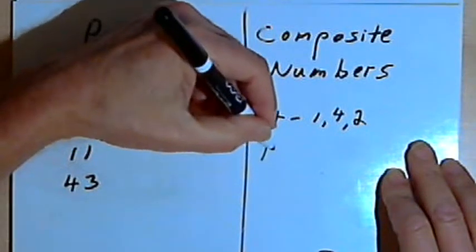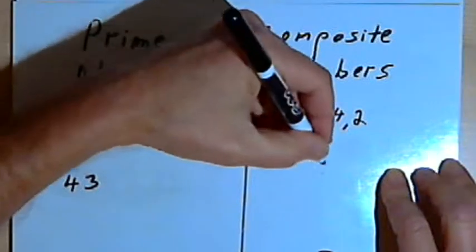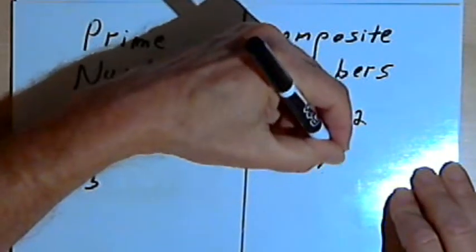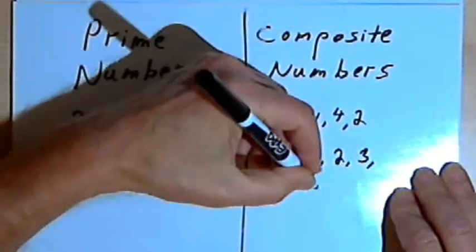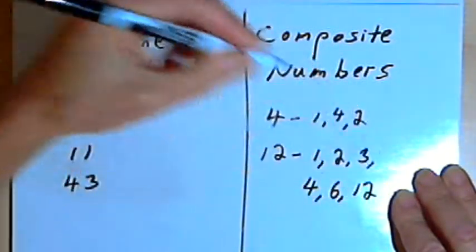The number 12 is a composite number. There's a number of numbers I could divide it by. I could divide it by 1, 2, 3, 4, 6, and 12.